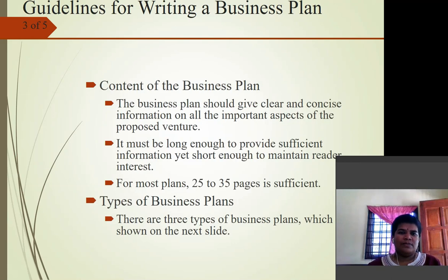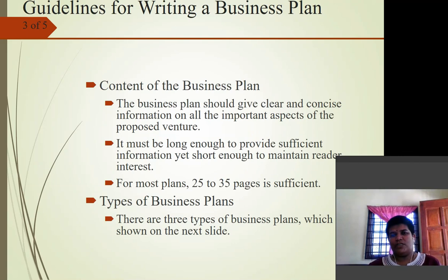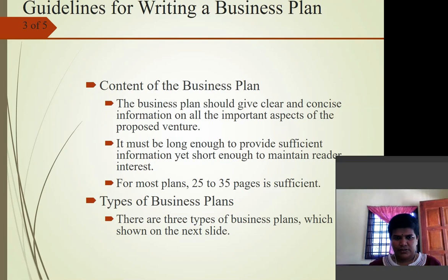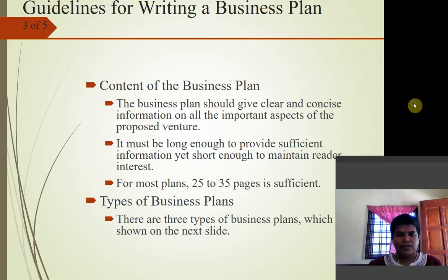The business plan should give clear and concise information on all important aspects of the proposed venture. It must be long enough to provide sufficient information yet short enough to maintain reader interest. For most plans, 25 to 35 pages is sufficient. In this book, there are three types of business plans, which we will look at in the following slides.